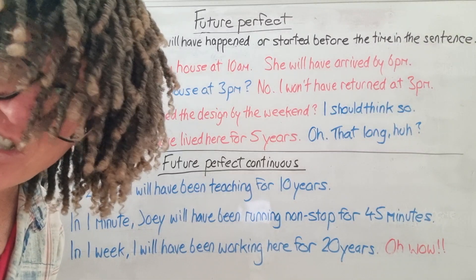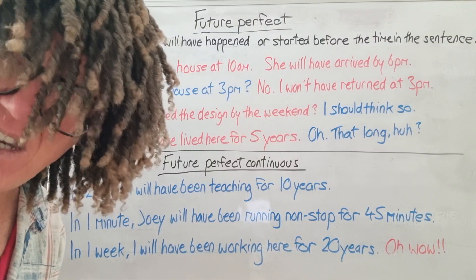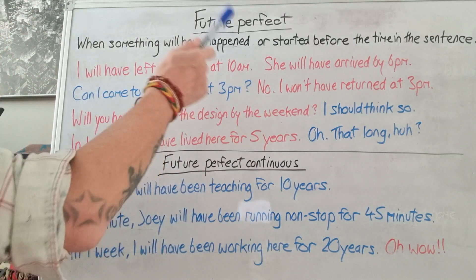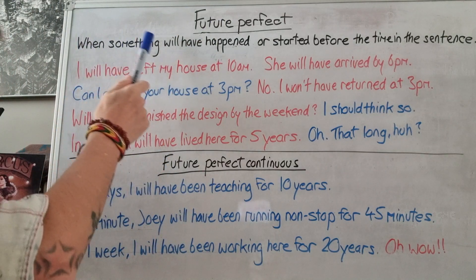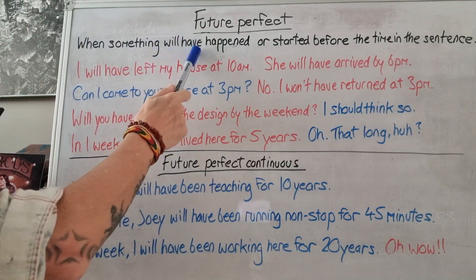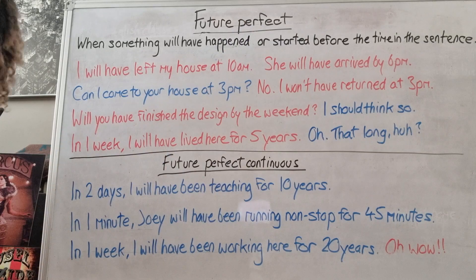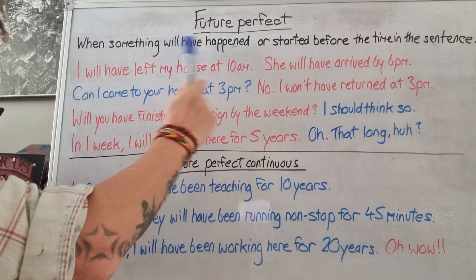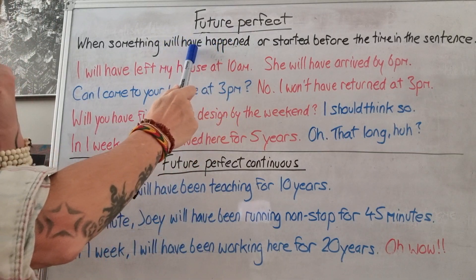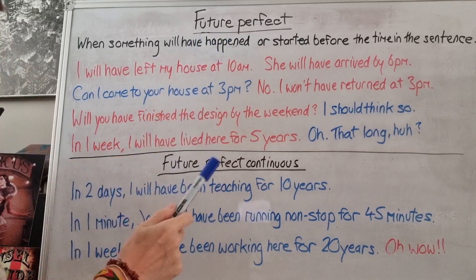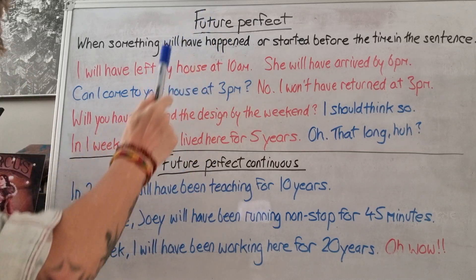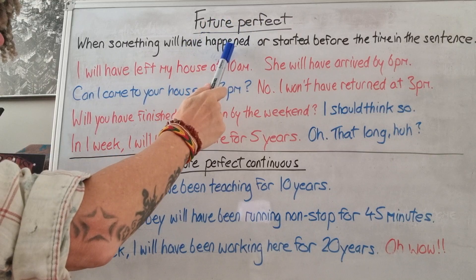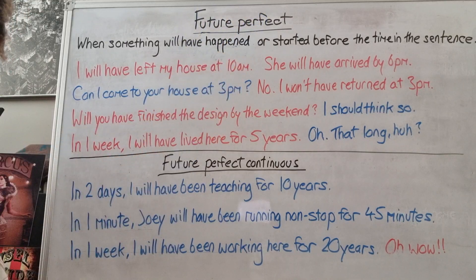Hello and welcome to another English class. Today we are looking at future perfect. Future perfect is used when something will have happened or started before the time in the sentence. The grammar is: will have happened — will for the future, have because it's perfect, and past participle because it's perfect.